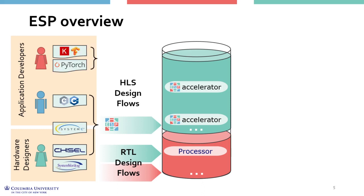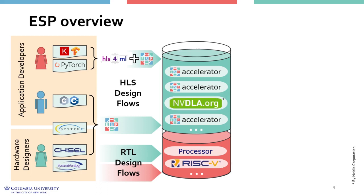The designer can design their accelerators using either Chisel or traditional RTL languages like Verilog, while the HLS flows are currently three: SystemC accelerators for Cadence Stratus HLS, C/C++ accelerators for Vivado HLS, and Keras, PyTorch, or ONNX accelerators for the HLS4ML tool. All accelerators generated with the ESP design flows become part of an IP library, which can also contain third-party IPs. Examples of third-party components currently included are the RISC-V Ariane core from ETH Zurich and the NVIDIA Deep Learning Accelerators.